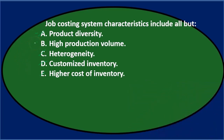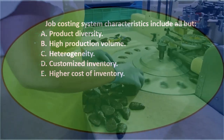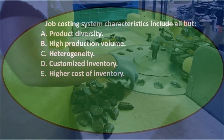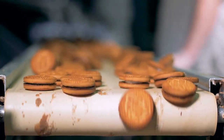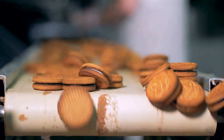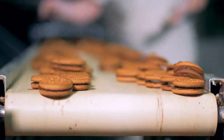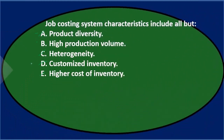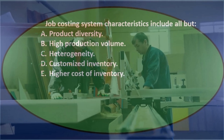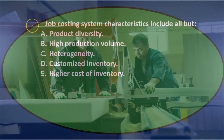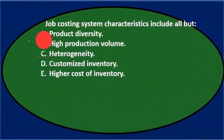So we're left with B, high production volume. That makes sense because we can't have high production — we're comparing this to a process cost system. We're going to have a lower production volume because of all this diversity in production. All of our products are different in nature, so when compared to a process cost system, we won't be able to make as many of them. We're going to customize them, make fewer of them, hopefully charge more for them. Final answer: job costing system characteristics include all but B, high production volume.